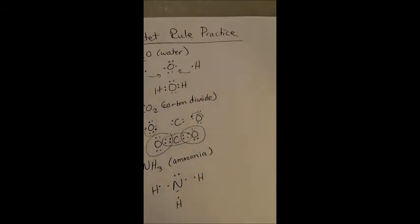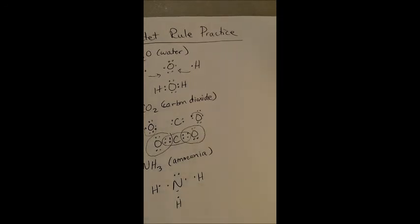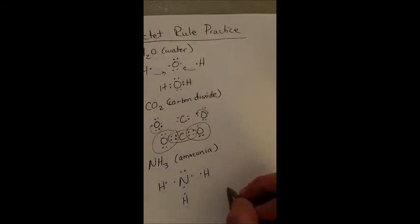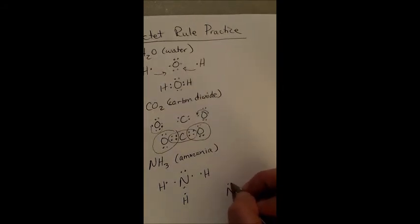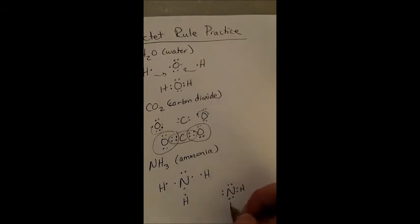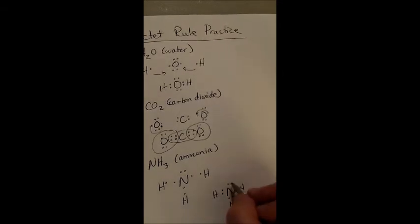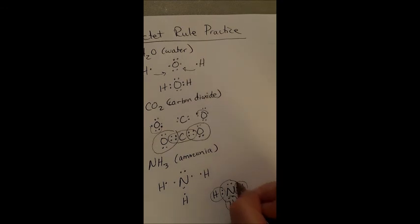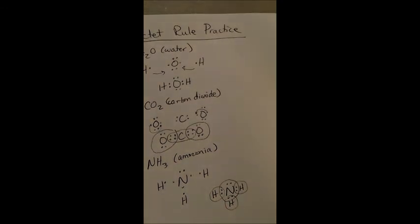We're going to put those together so that we end up with NH3. Our hydrogens each have two electrons and our nitrogen has eight. All right, thank you.